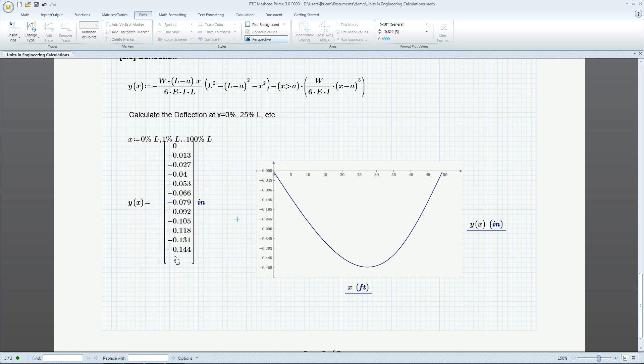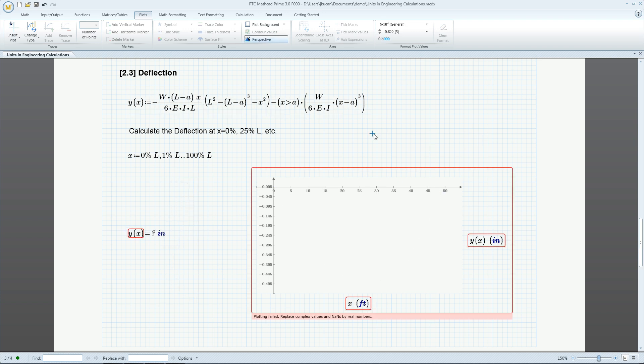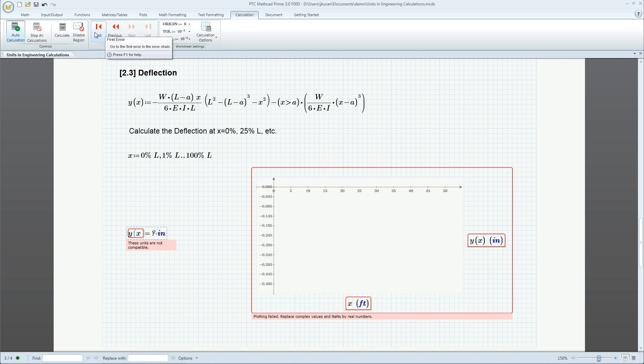PTC MathCAD Units Intelligence also checks for errors. Instead of squaring a term, if it is mistakenly cubed, error flags immediately show the problem. You can trace that error to the source, which points out the faulty term.